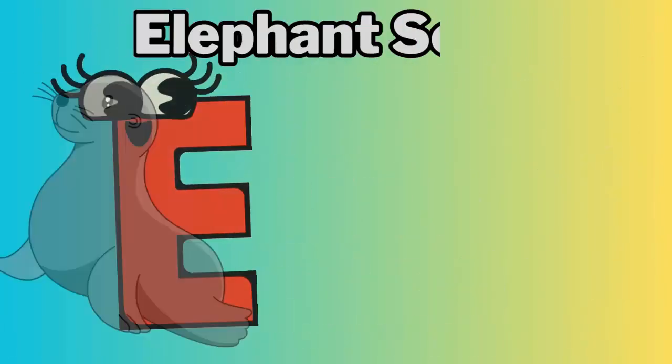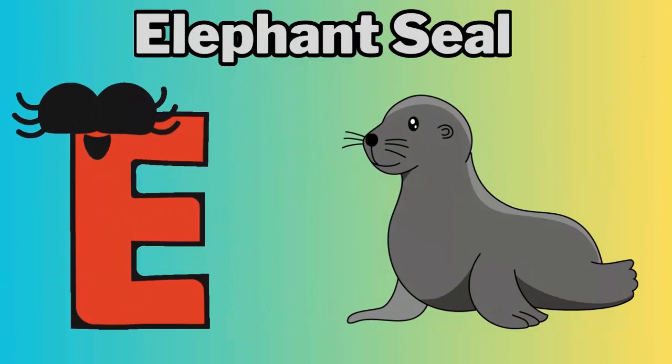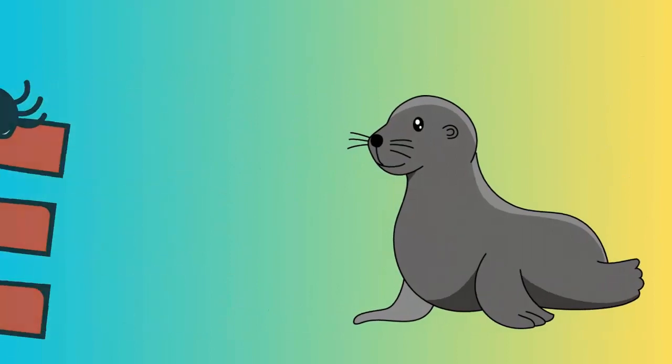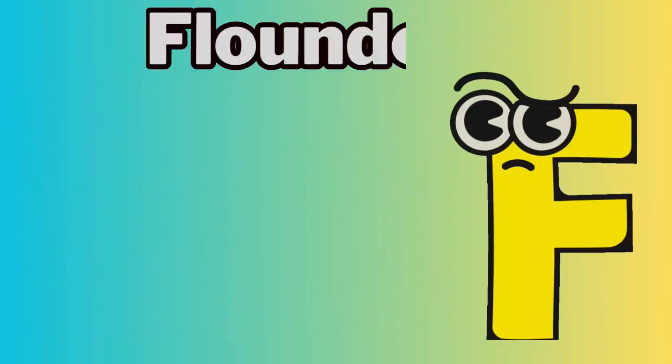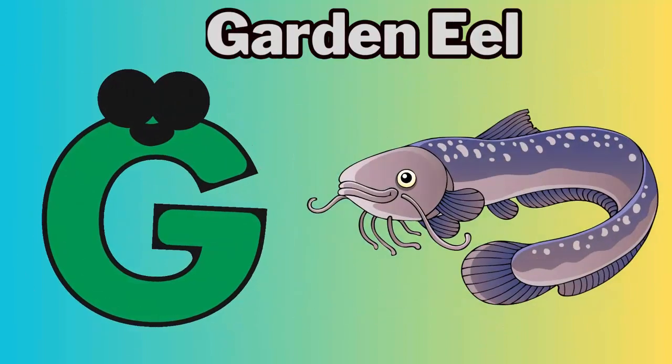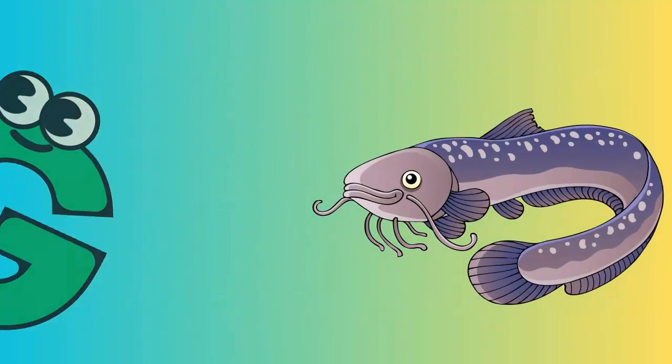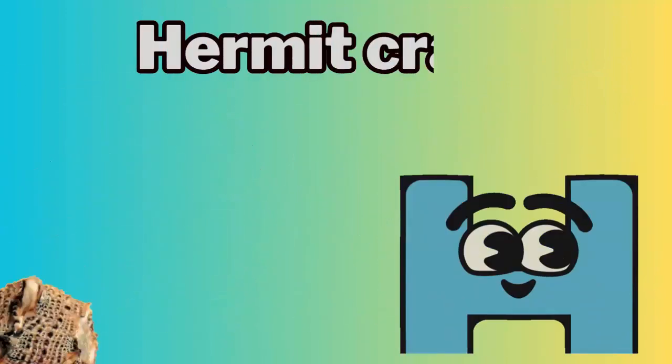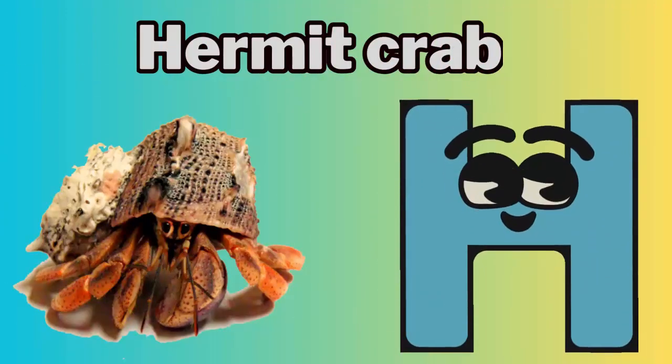E for Elephant Seal. F for Flounder. G for Garden Eel. H for Hermit Crab.